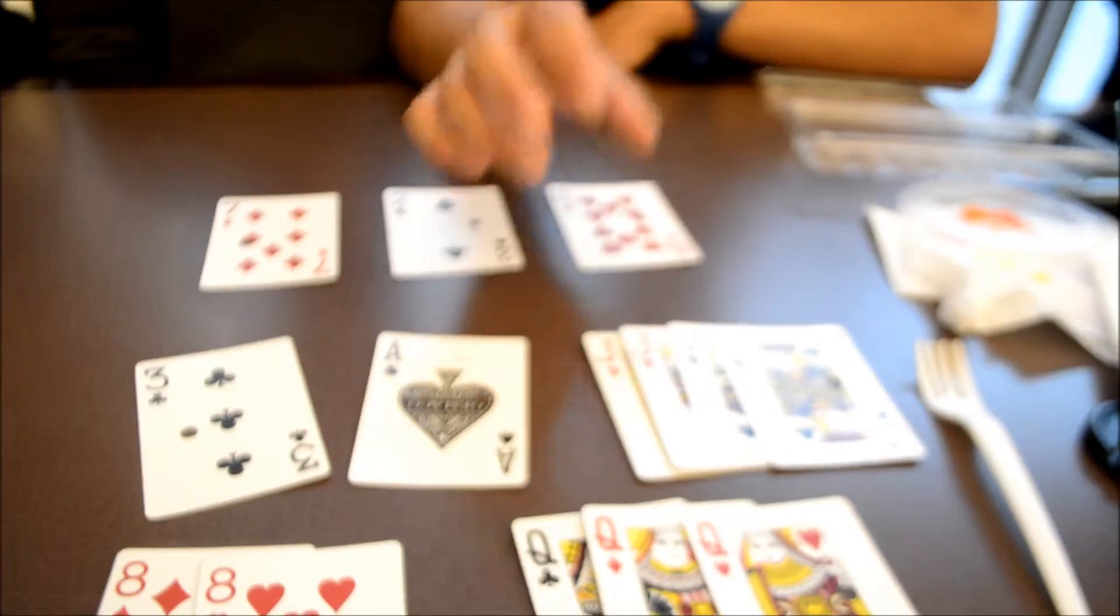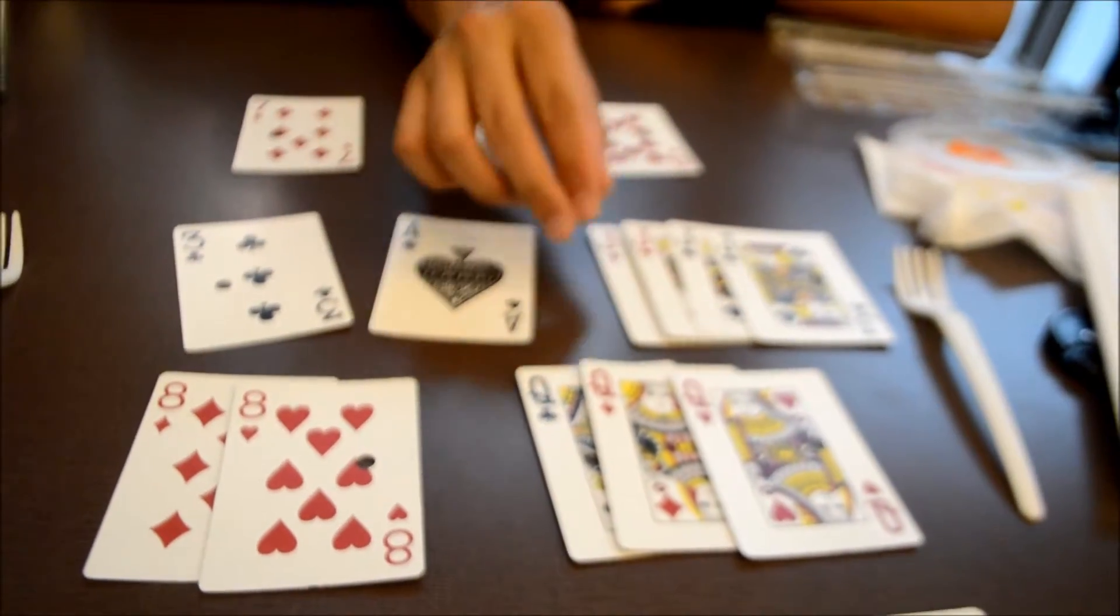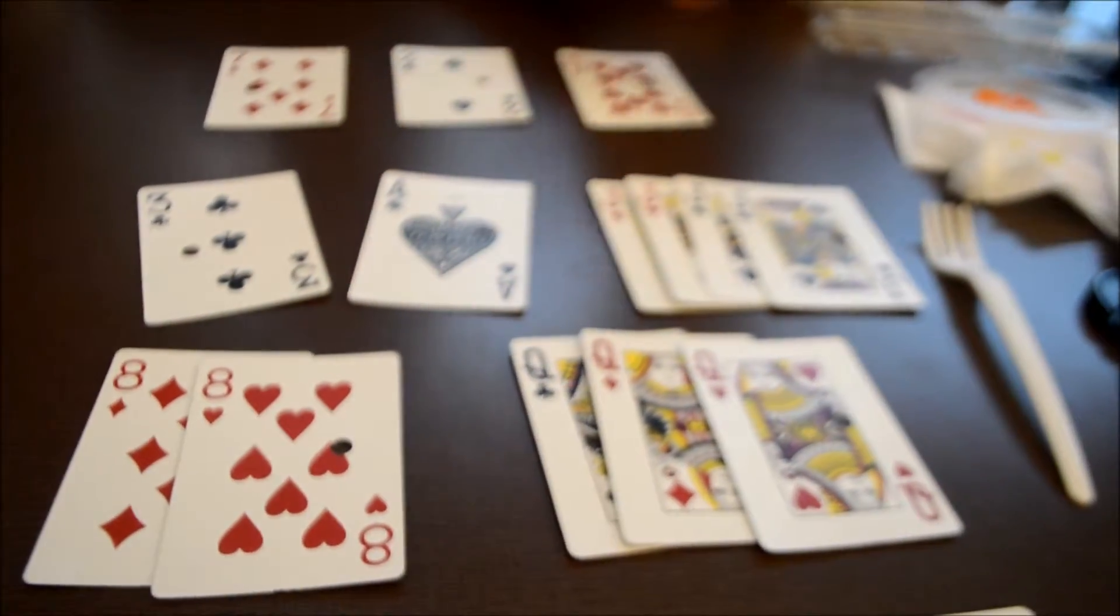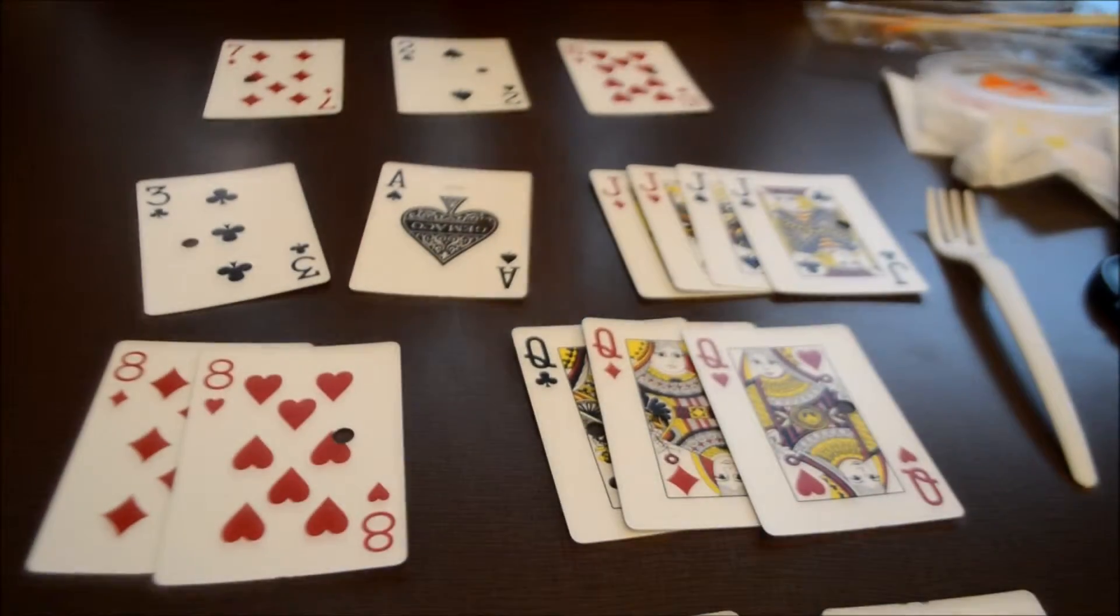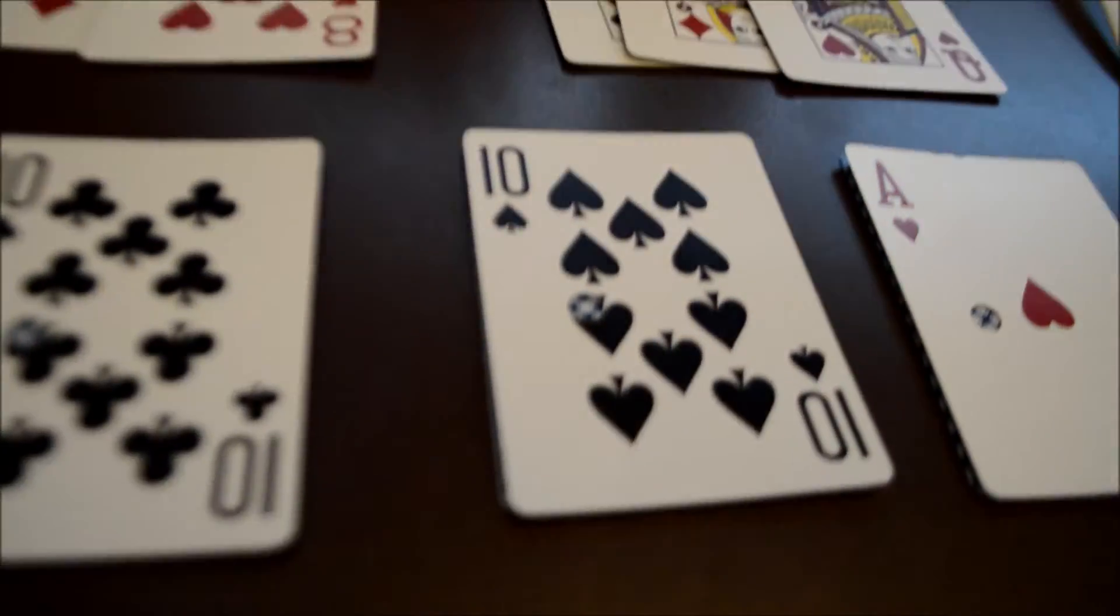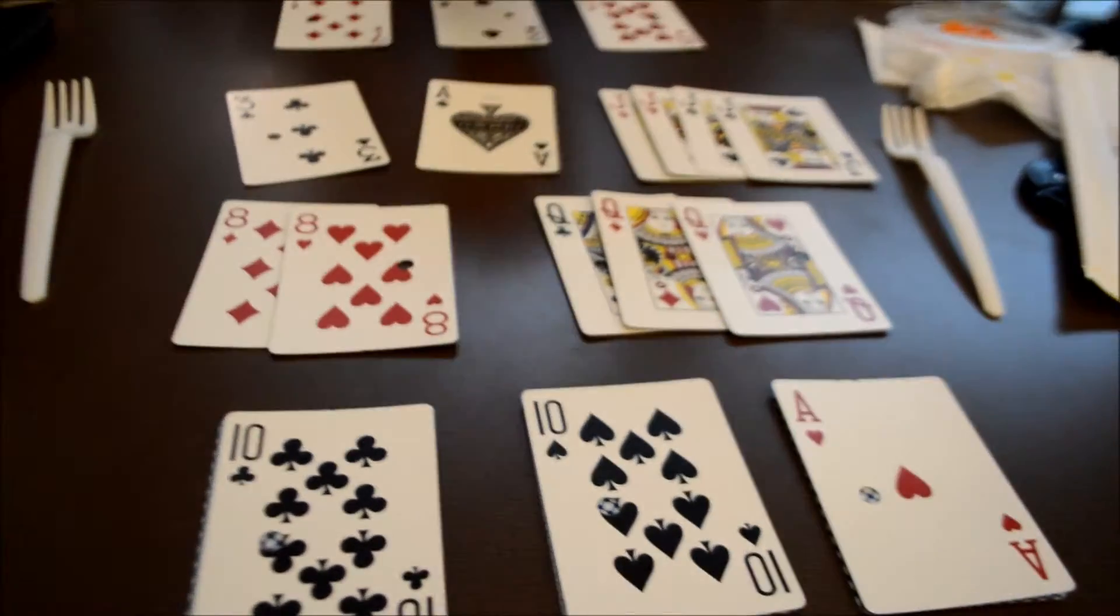So if you have less than three cards in your hand, you're also going to pick up cards from the middle pile until you have three cards in your hand. If you're unable to play at any time, then you have to basically pick up the middle pile and the next person goes.